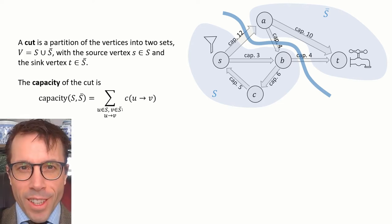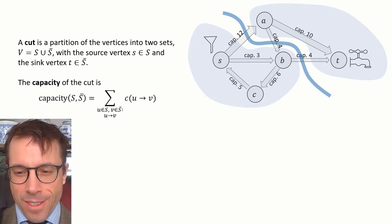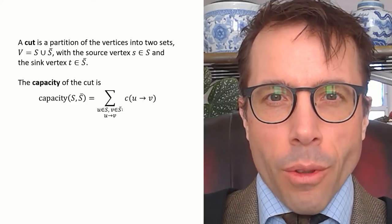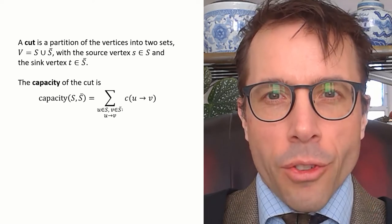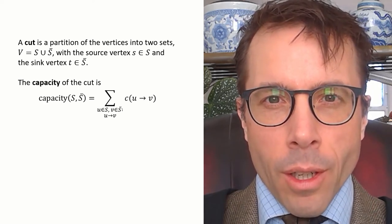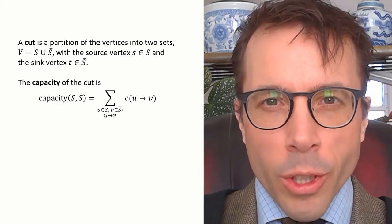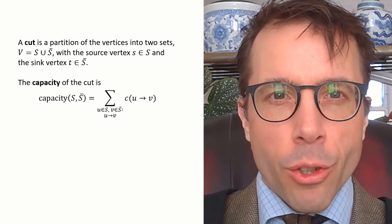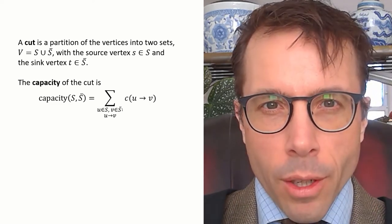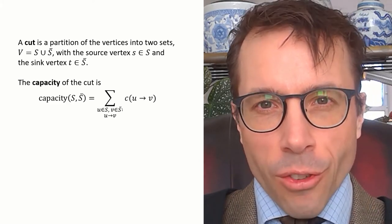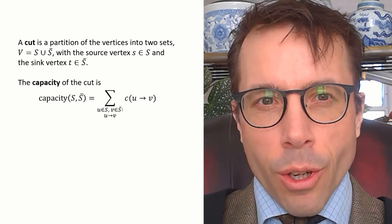If you said 20, try again. Let's rearrange our vertices so that the set S is on the left and the set S bar is on the right. If we read the definition closely, we see that we're only meant to add up the capacities of edges that go from left to right. So the capacity of this cut is 12 plus 4, which is 16. We ignore the edge that goes right to left.